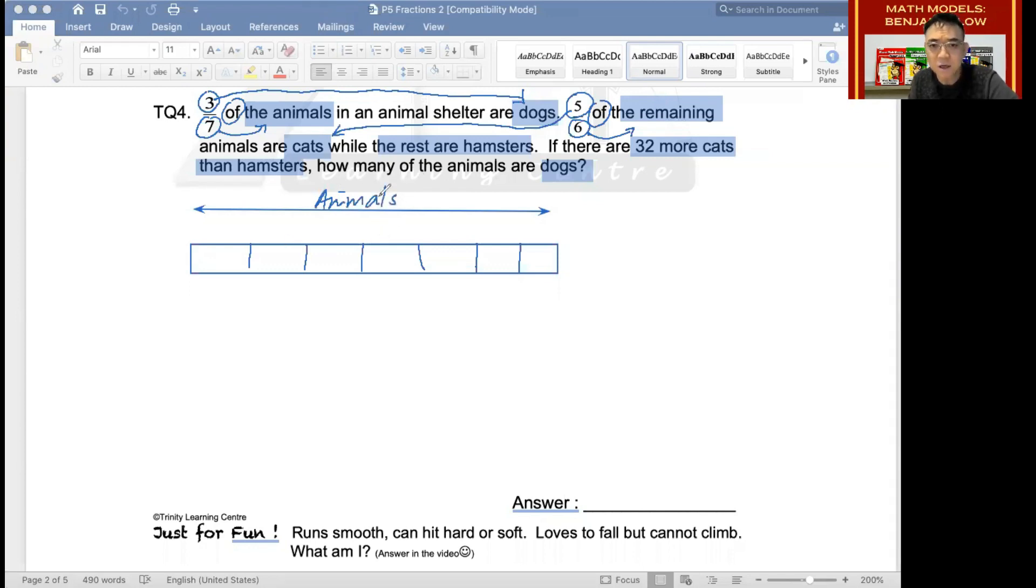And then over here, you should have the word animals. So this represents all the animals. And of these animals, what does the three represent? What is this? That's right, the answer should be dogs. And I told you earlier that whenever we see the word remaining appear, what must we do? You must label it in the model, and you must bring it down.